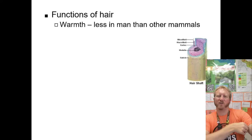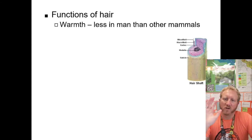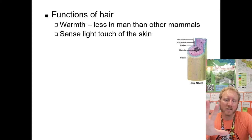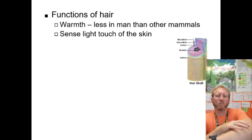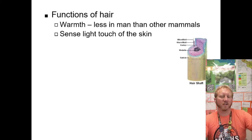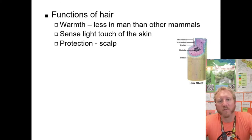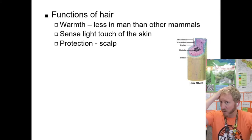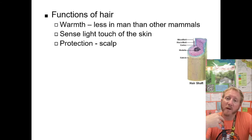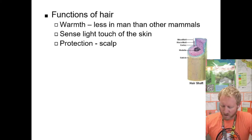Hair provides some warmth, though less so in humans than in other mammals. It's also useful in detecting very light touches on the skin — brushing against hairs is much more noticeable than light contact with bare skin. Hair also provides protection, especially at the scalp where the brain is. In male lions, the mane protects from other lions during fights.